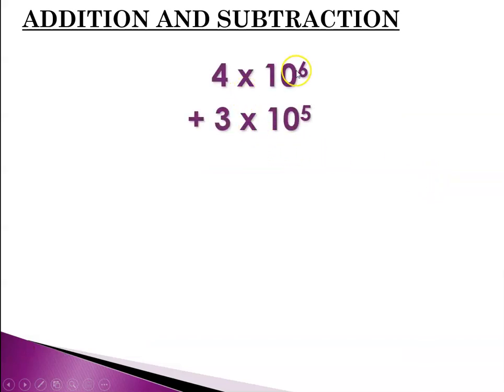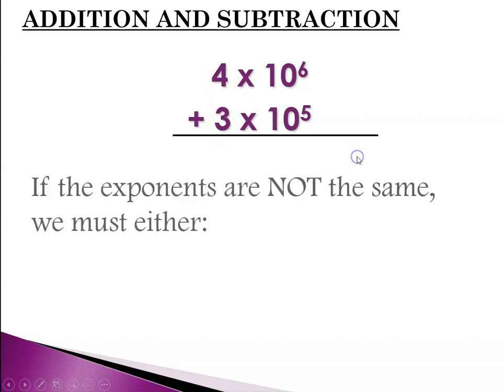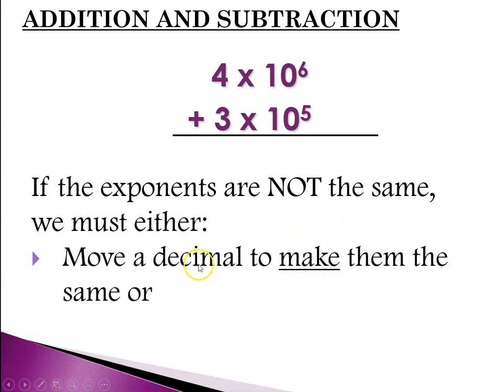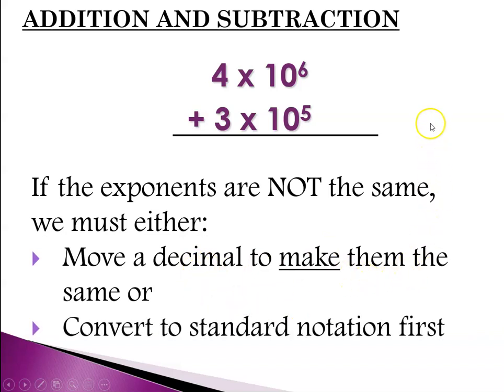However, if one number is 4 times 10 to the 6 and the second number is 3 times 10 to the 5th, you can't just simply add them because they're not the same magnitude. This is 4 million and this is 300,000. So when the exponents are not the same, meaning the number does not have the same magnitude, we have two choices. You can move the decimal to make them the same or you can convert them back to standard notation first, or you can use your calculator. But let's say we're doing it on pencil and paper. So I'm going to show you both methods.